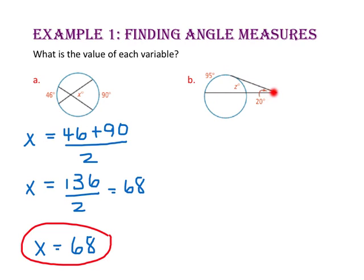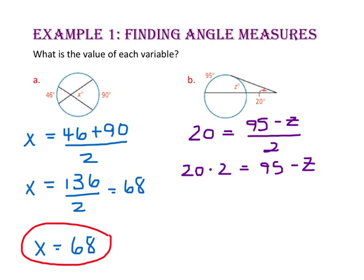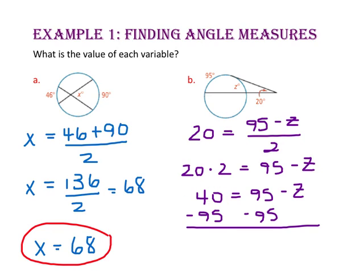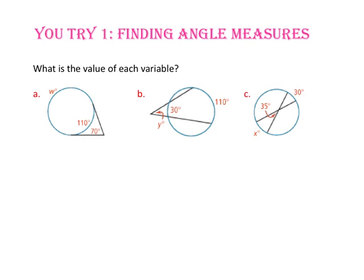In part B, we have a tangent and a secant that intersect outside the circle, so this angle measure will be half of 95 minus z. Let's multiply both sides of the equation by 2, so 40 equals 95 minus z. We'll subtract 95 from both sides and negative 55 equals negative z. Divide both sides by negative 1 and z equals 55. Pause the video and do U-try number 1.